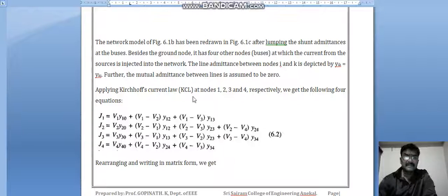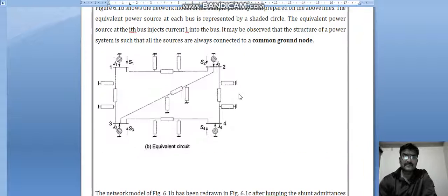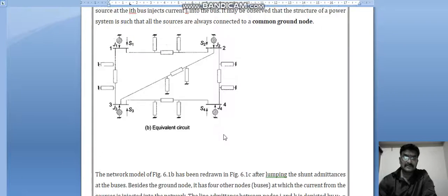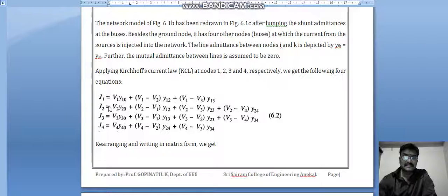Applying Kirchhoff's current law at nodes 1, 2, 3, 4, we can get equation J1 equals V1*Y10 plus (V1 minus V2)*Y12 plus (V1 minus V3)*Y13.